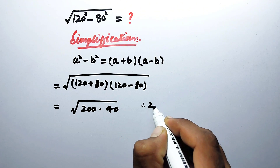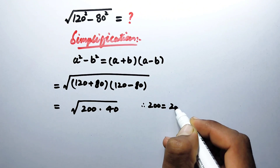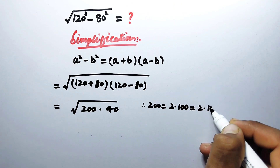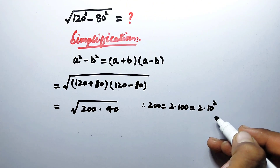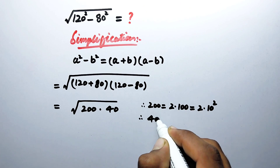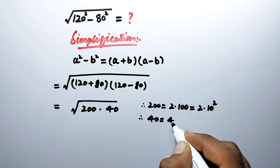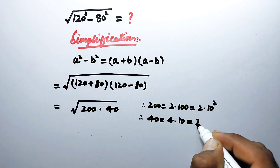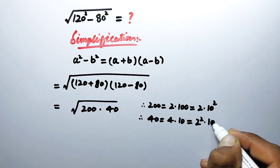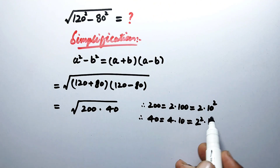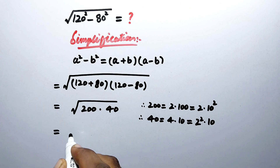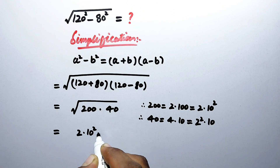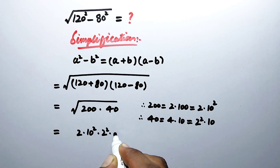We simplify 200 as 2 times 100, that is equal to 2 times 10 squared. And we simplify 40 as 4 times 10, which may also be written as 2 squared times 10. So now, by putting these values, this expression will be equal to the square root of 2 times 10 squared times 2 squared times 10.